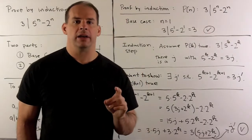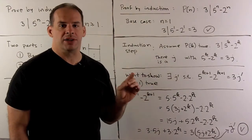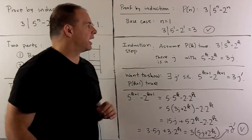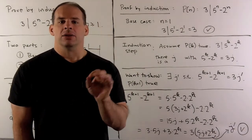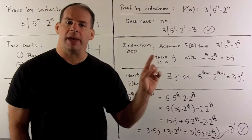For the problem at hand, the n statement is that 3 divides 5 to the n minus 2 to the n. We begin with our base case when n is equal to 1. So we're asking does 3 divide 5 minus 2 that's equal to 3. So our base case holds.